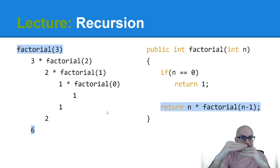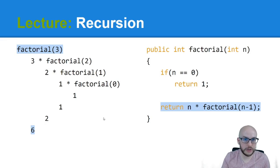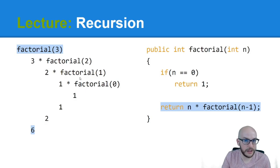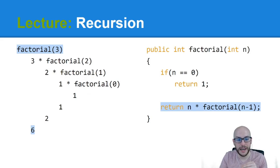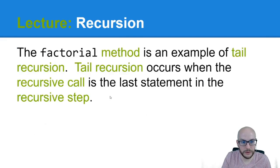Now the call stack collapses. Factorial(0) gives us one. One times one is one — so we know factorial(1). Two times factorial(1), which is one, gives us factorial(2) equals two. And factorial(3) is three times two, which is six. Things were stacking up until we hit the base case. The last thing added to the stack — factorial(0) — was the first to be executed: last in, first out. And that's how we get factorial(3).